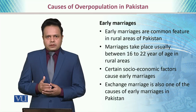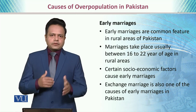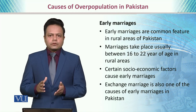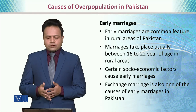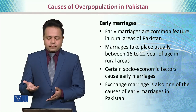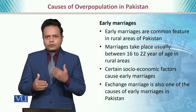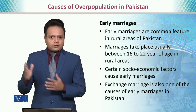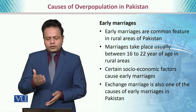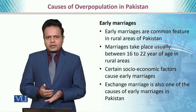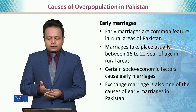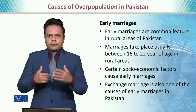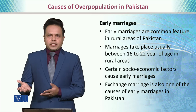Early marriages are another factor. Although this trend is significantly changing, especially in urban areas, early marriages remain a common feature in rural Pakistan. Marriages take place usually between 16 to 22 years of age in rural areas, making a female's fecundity period much longer compared to females in other countries. Certain socioeconomic factors and exchange marriages also cause early marriages. The earlier the marriage, the more productive the period of a female and the greater the population.